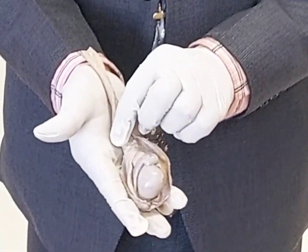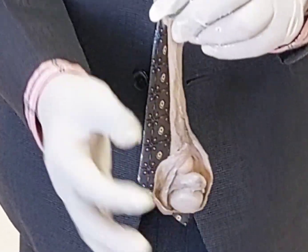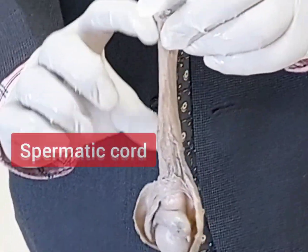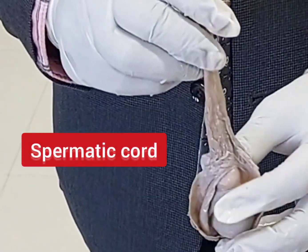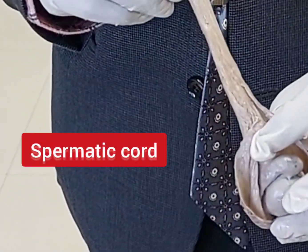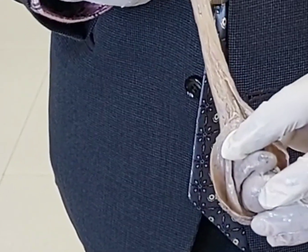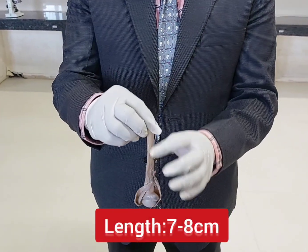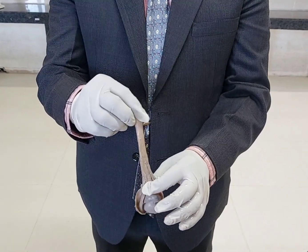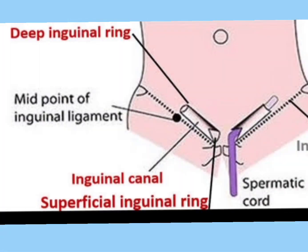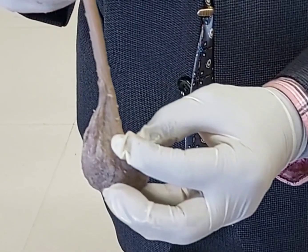What is this? This is the spermatic cord. What is the average length of the spermatic cord? It is about 7 to 8 centimeters. It starts at the level of the deep inguinal ring, passes through the inguinal canal, then through the superficial inguinal ring, and then up to the posterior border of the testis.